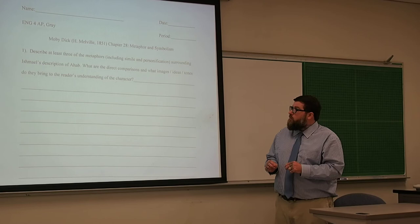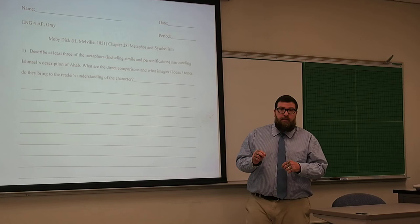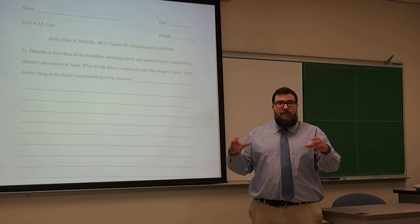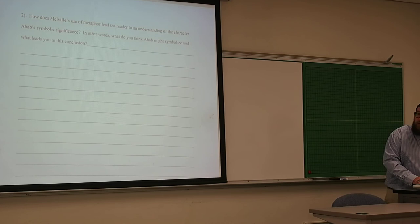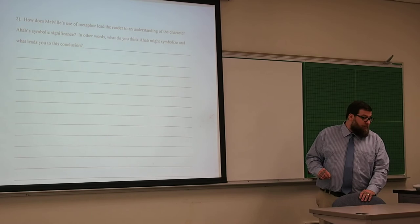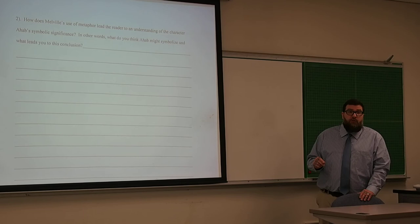And what images, ideas, and tones do they bring to the reader's understanding of the character? Once students have successfully and individually analyzed each metaphor, they're now ready to synthesize these ideas into an inference about the symbolic nature of the character. And so that leads to question two. How does Melville's use of metaphor lead the reader to an understanding of the character Ahab's symbolic significance? In other words, what do you think Ahab might symbolize and what leads you to this conclusion?